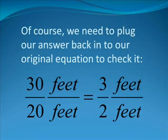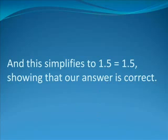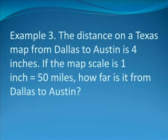And that is our final answer. Of course, we need to plug our answer back into the original equation to check it. 30 feet divided by 20 feet is equal to 3 feet divided by 2 feet, and this simplifies to 1.5 equals 1.5, showing that our answer is correct.